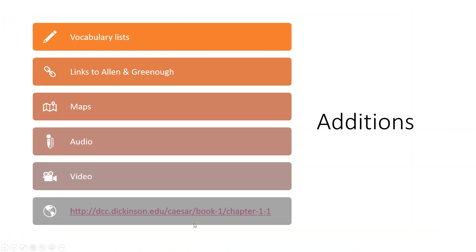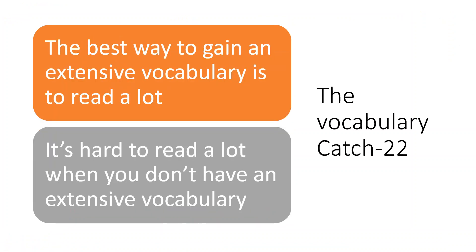The vocabulary lists are a key piece for me because of the catch-22 of learning any language, but especially Greek and Latin: the best way to gain an extensive vocabulary is to read a lot, but it's hard to read a lot when you don't have an extensive vocabulary. Our solution is to provide running lists not of every word, but just of the uncommon ones. We have a defined list of a thousand extremely common Latin words that we exclude and give you all the other ones. Creating this for Caesar was extremely time-consuming, and it was clear going forward that we had to have a better workflow.